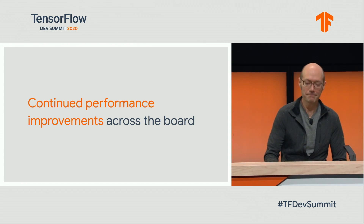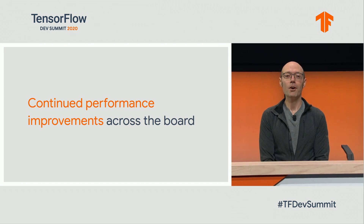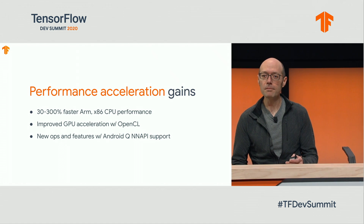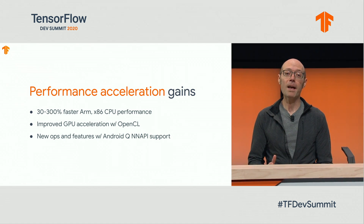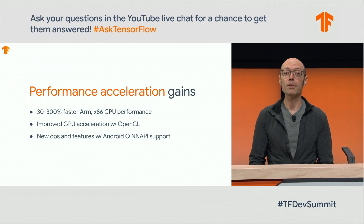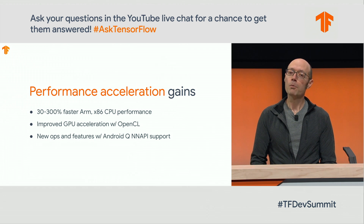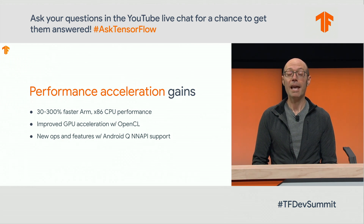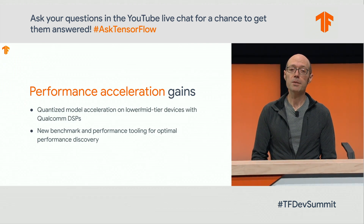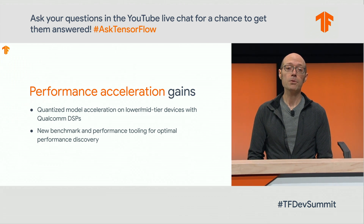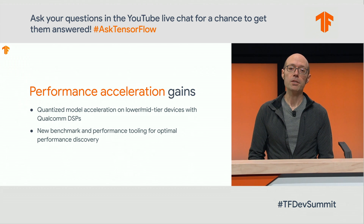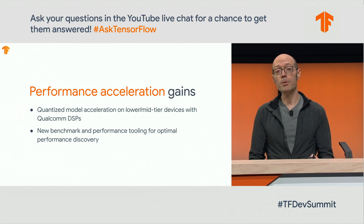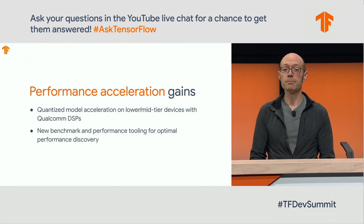Thanks, Tim. I'm TJ, and I'm an engineer on the TensorFlow Lite team. Let's talk about performance. A key goal of TensorFlow Lite is to make your models run as fast as possible on CPUs, GPUs, DSPs, or other accelerators, and we've made serious investment on all these fronts. Recently, we've seen significant CPU improvements, added OpenCL support for faster GPU acceleration, and have full support for all Android Q NNAPI ops and features. Our previously announced Qualcomm DSP delegate targeting low and mid-end devices will be available for use in the coming weeks. We've also made some improvements in our benchmarking tooling to better assist model and app developers in identifying optimal deployment configurations, and we've got a few new CPU performance improvements since TensorFlow World.